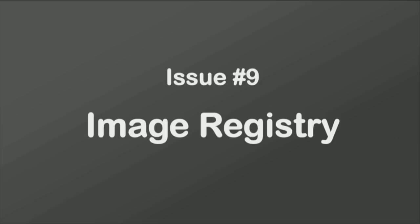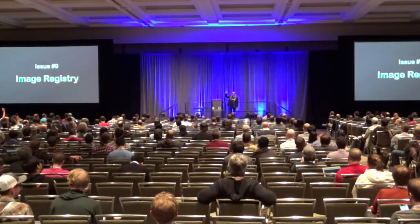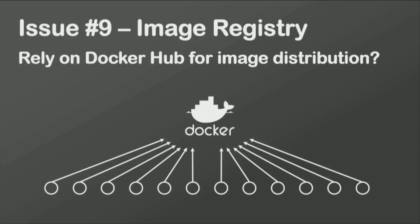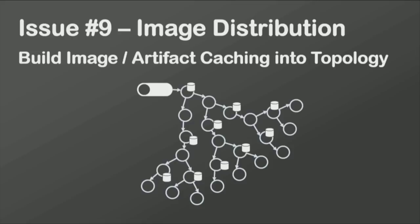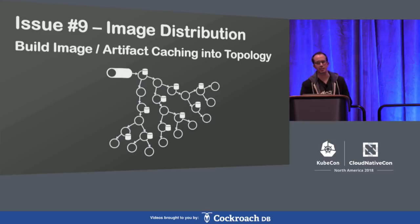Another issue: image distribution. Who's hit scalability problems with Docker Hub? If you're deploying directly from Docker Hub, that can be a single point of failure. You want to optimize deployment of images to follow the path of your data or application. As you propagate applications out to clusters in far corners of the world, you also want to propagate the images underlying those containers. Using tools like Harbor or setting up an image registry in a caching topology is something we've done to get better scalability out of image deployment and artifact caching.